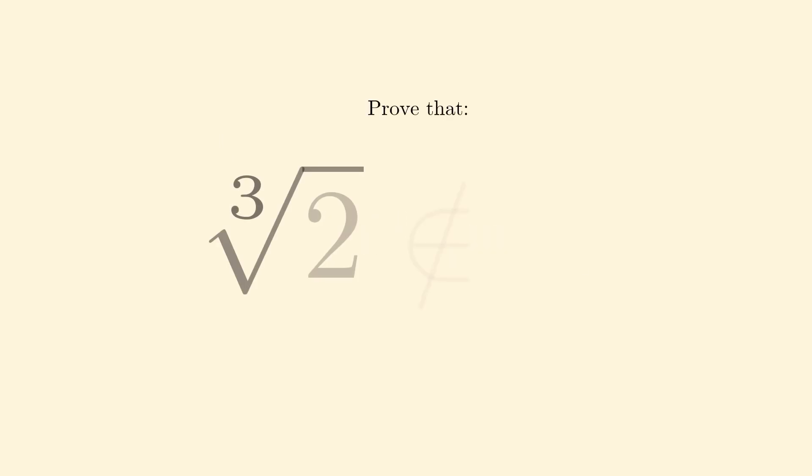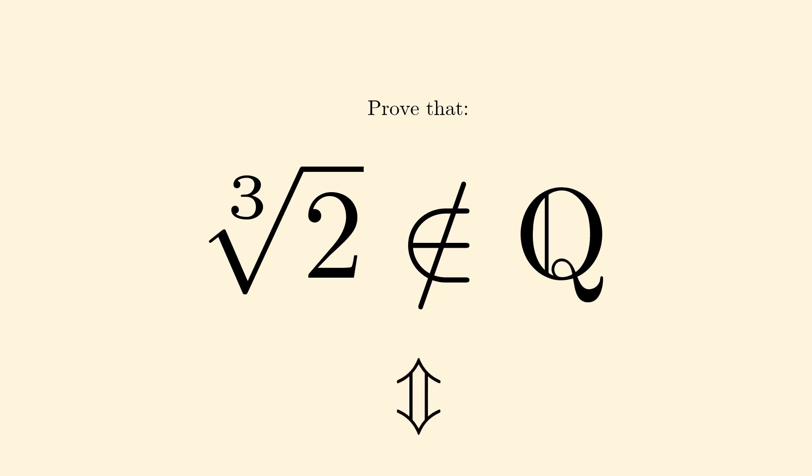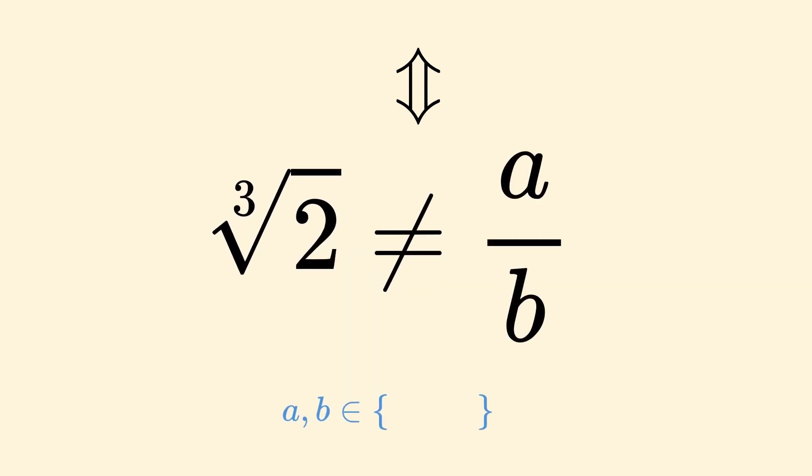Let's quickly show that the cube root of 2 is irrational using Fermat's Last Theorem. This is equivalent to saying that the cube root of 2 cannot be written as a fraction of two integers, a and b.